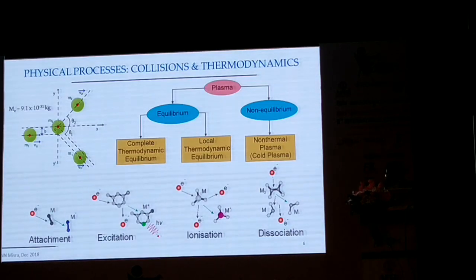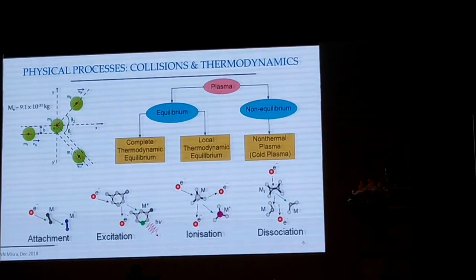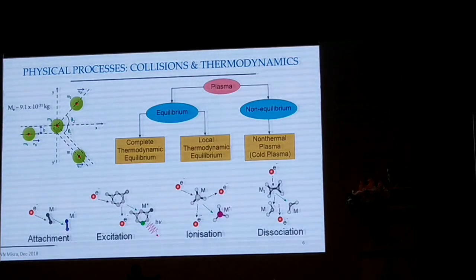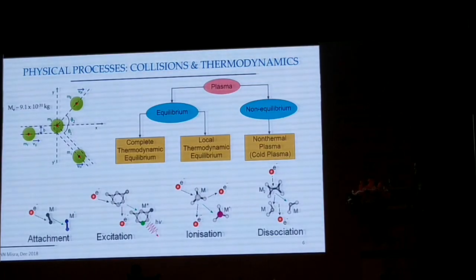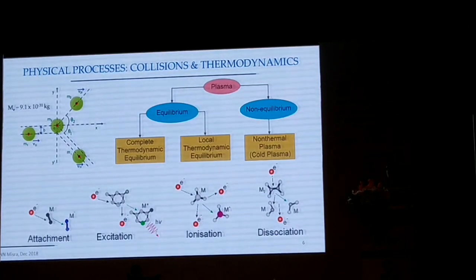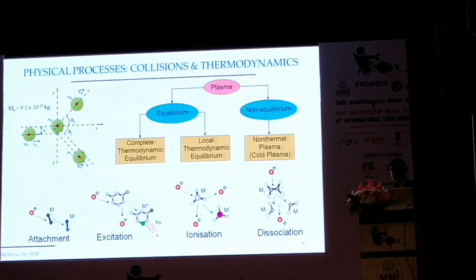There are essentially four processes which drive the chemistry of plasma: attachment reactions, excitation, ionization, and dissociation - which we have all studied in high school. The idea is we energize the gas using electric fields, and that results in these four basic physical processes, which drives the chemistry. By changing the gas or changing the strength of the electric field, I can generate entirely different chemistries inside the gas, which I can use for my own application.